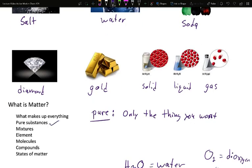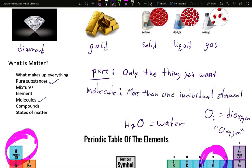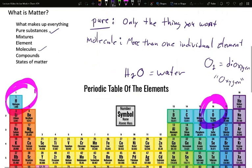Mixtures on the other hand, let's jump down a little bit. Let's talk about molecules. So pure substances can be individual elements, or they can be combinations of elements. A molecule, very specifically, is more than one component, or sorry, more than one individual element.